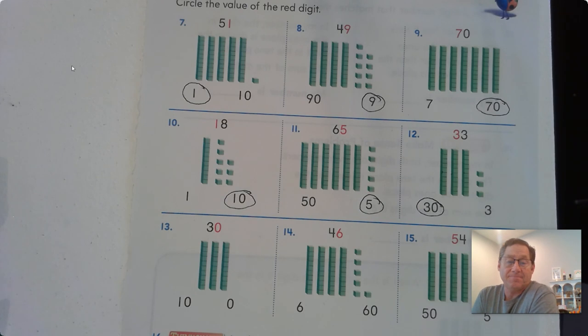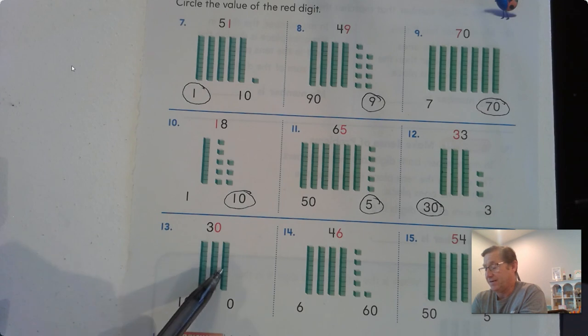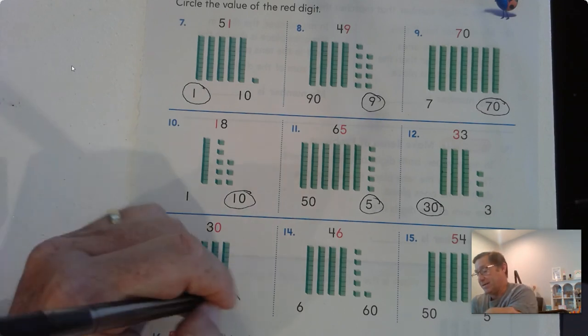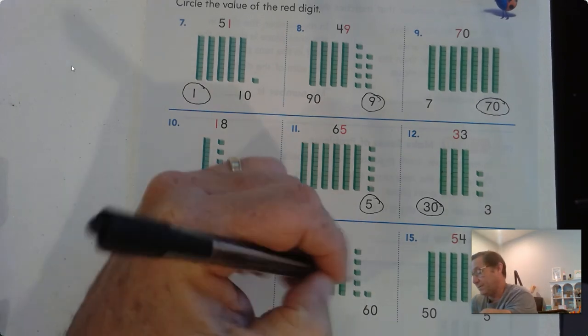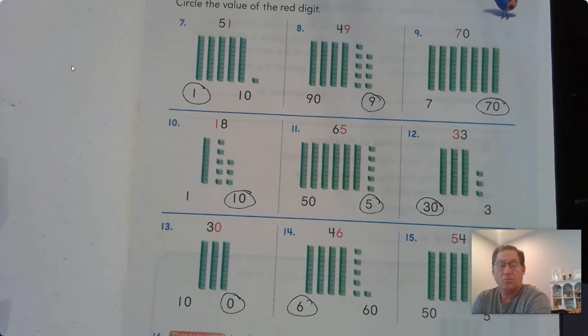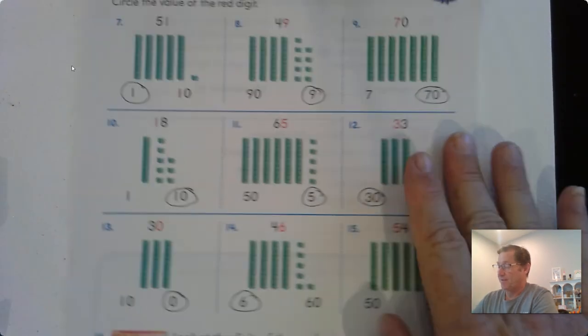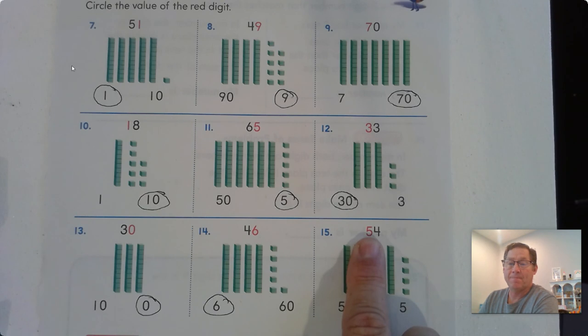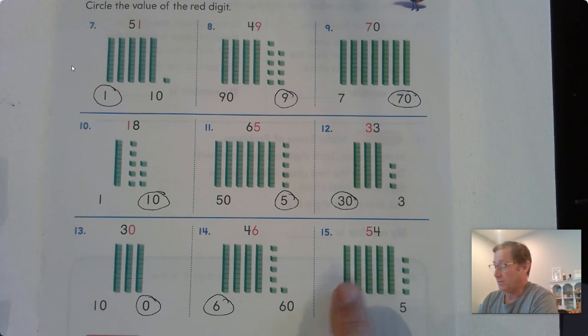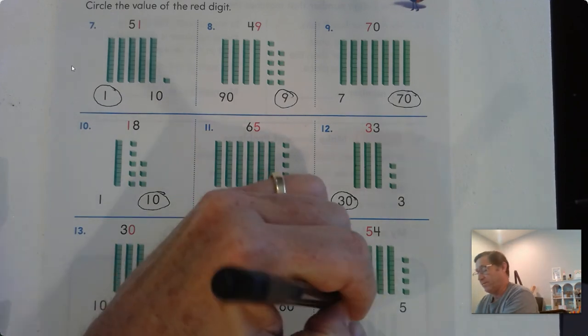Number 13: 30. We have to find what place value is the 0. The 3 is in the tens place - 10, 20, 30. There aren't any ones, so we circle 0 ones. Problem 14: 46. There's 6 ones. Problem 15: 54. The 5 is the digit that's red. There's 5 tens - 1, 2, 3, 4, 5 tens, so 50.